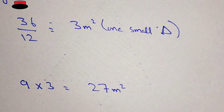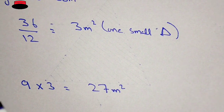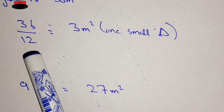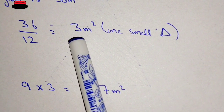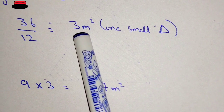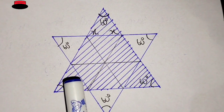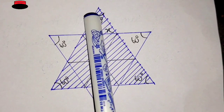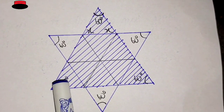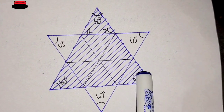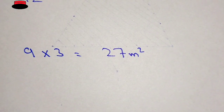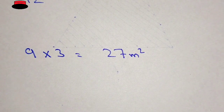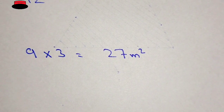Since the area of the star is 36 square meters and there are 12 small triangles, the area of one small triangle is 36 divided by 12, which equals 3 square meters. There are 9 small triangles inside the shaded region — counting them: one, two, three, four, five, six, seven, eight, nine. Therefore, the area of the shaded region is 9 times 3, which equals 27 square meters. I hope you understand — thank you for watching.